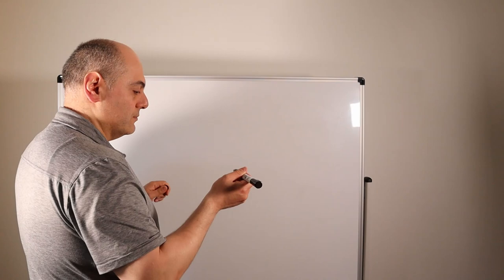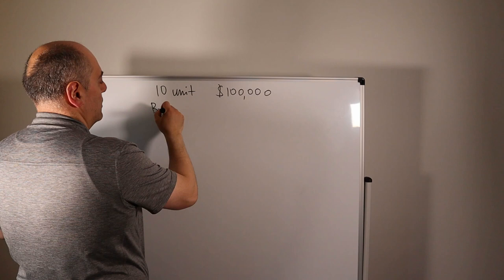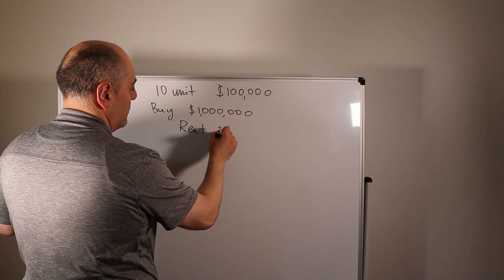So here is the example. Let's say we buy a 10 unit building and each door is hundred thousand dollars, so we buy it for 1 million bucks. And let's say the rents are thousand dollars a month, so in a month you collect ten thousand dollars in rents.